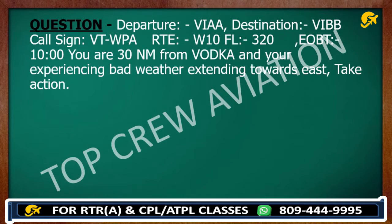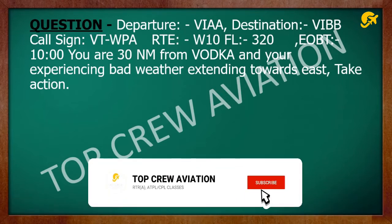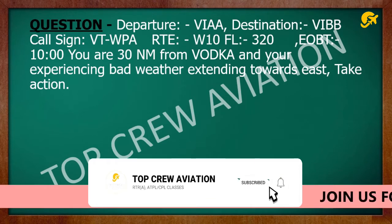Let's say the question is: departure is VIA, destination is VIBB — any points for example. Call sign is Victor Tango Whiskey Papa Alpha. Route is Whiskey 10, flight level 320. EOBT is 1000.